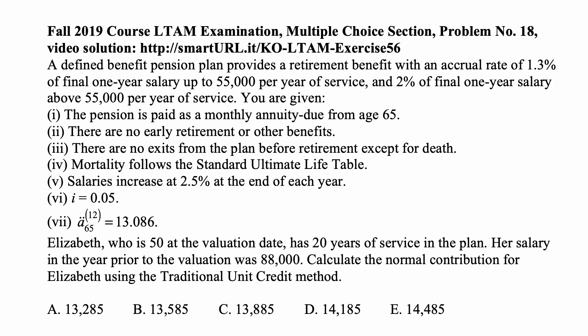Mortality follows the standard ultimate life table. Salaries increase at 2.5% at the end of each year. Interest rate is 5%. A double dot 65 upper 12 is equal to 13.086.